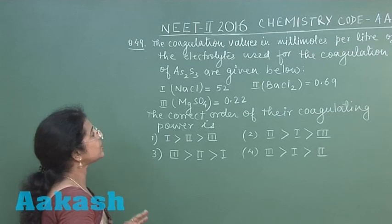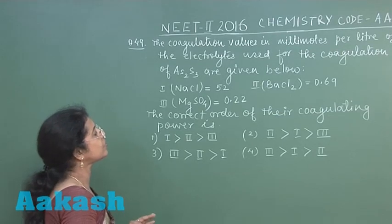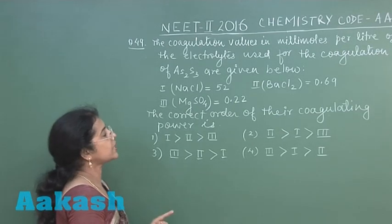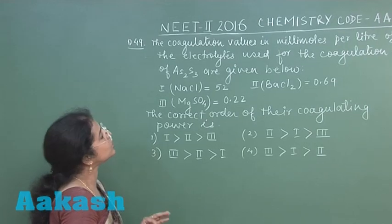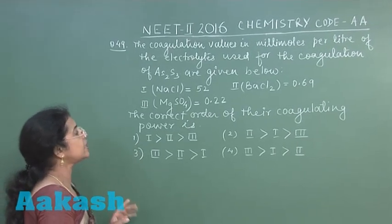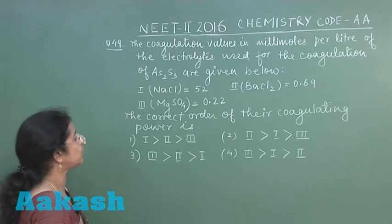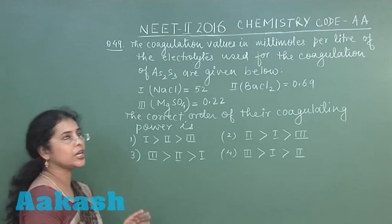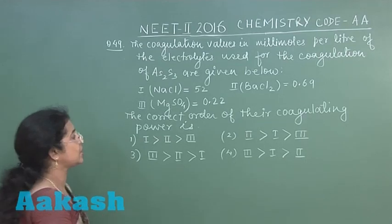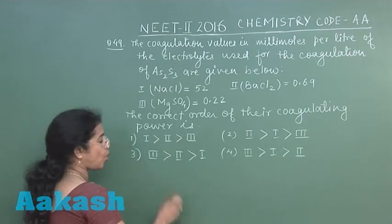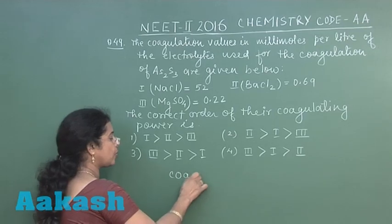The first one is NaCl, its coagulation value is 52. Second is barium chloride, coagulation value is 0.69. Third is magnesium sulfate, coagulation value is 0.22. We have to find the correct order of their coagulating power.